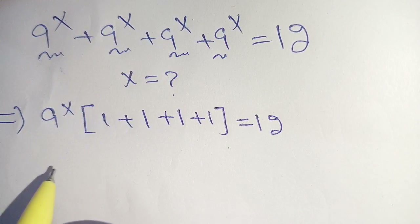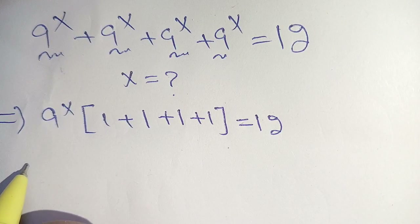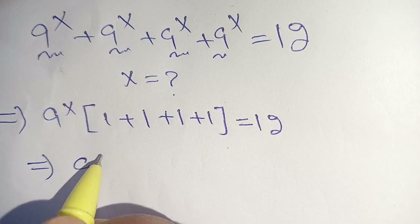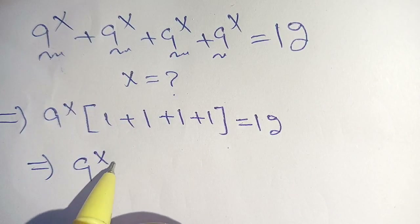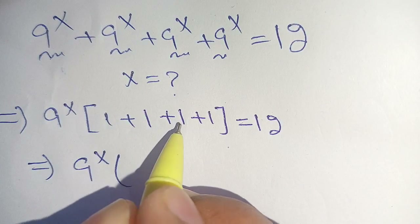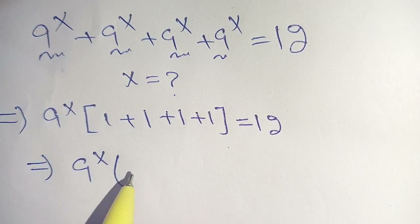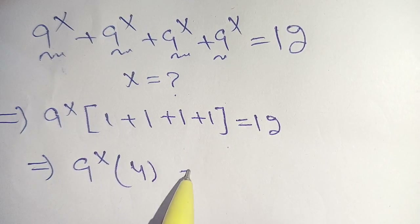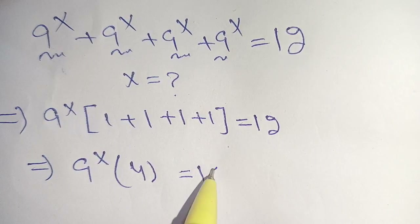In the next step, we can write this as 9 raised to the power x times 1 plus 1 plus 1 plus 1, which becomes 4, is equal to 12.